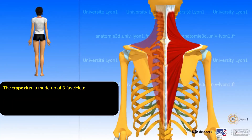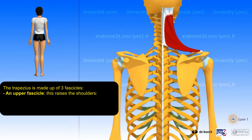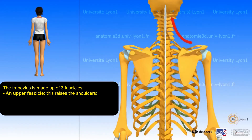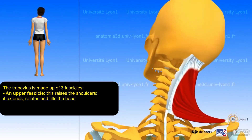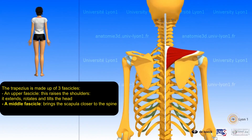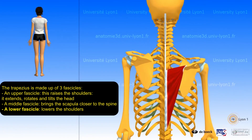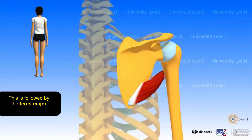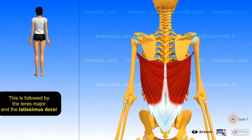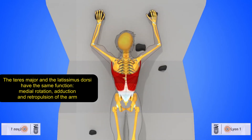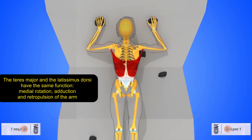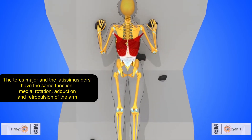The trapezius is made up of three fascicles: an upper fascicle, which raises the shoulders and extends, rotates, and tilts the head; a middle fascicle, which brings the scapula closer to the spine; and a lower fascicle, which lowers the shoulders. The teres major and latissimus dorsi share the same function: medial rotation, adduction, and retropulsion of the arm.